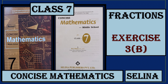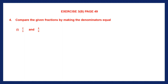Hello students, let's do fractions exercise 3b. We are on page number 49 with question 4: Compare. We're going to learn to compare fractions and there are three ways of doing it. Let's follow the question carefully and understand it. Compare the given fractions by making the denominators equal — this is the first way. We're going to compare 2 by 5 and 4 by 9, which means finding out which is greater or which is smaller.